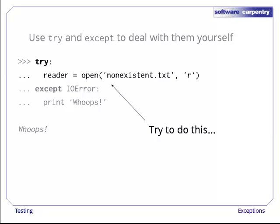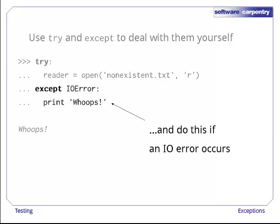When Python executes this code, it runs the statement inside the try. If that works, it skips over the except block without running it. If an exception occurs inside the try block, though, Python compares the type of the exception to the type specified by the except. If they match, it executes the code in the except block.